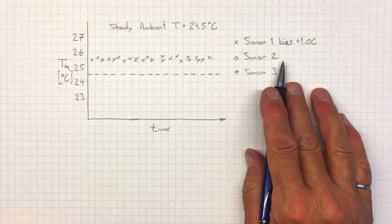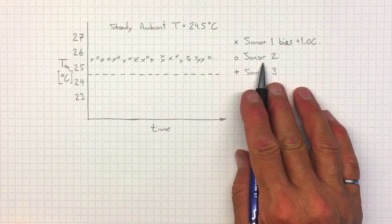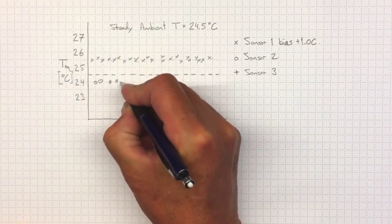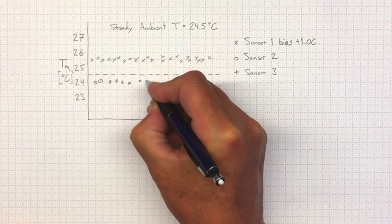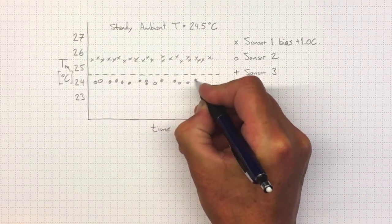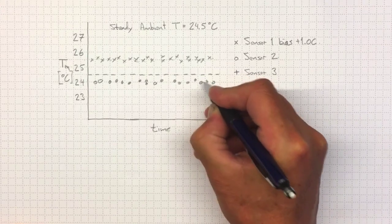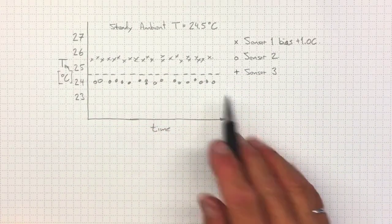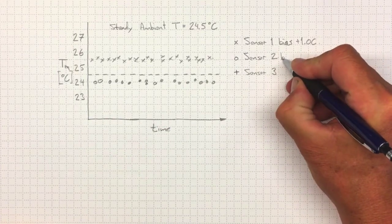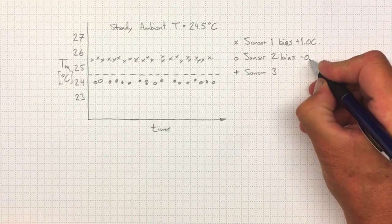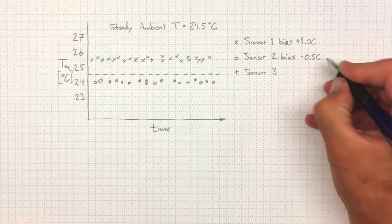I could repeat that test with sensor number two and I might wind up with a bunch of little circles like this over time. And that would tell me that sensor number two has a bias of about negative a half a degree C.